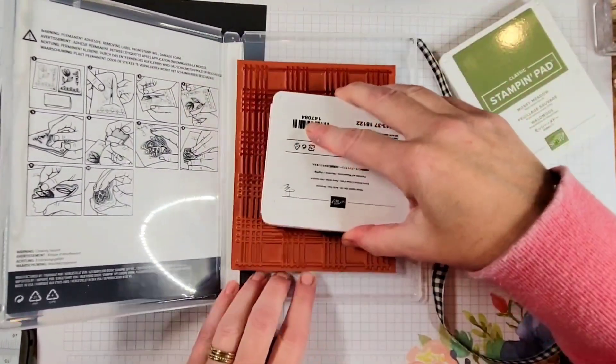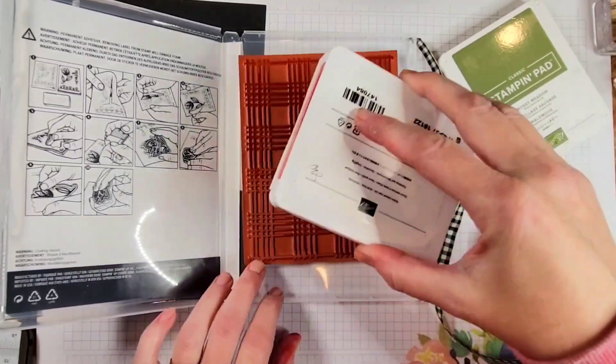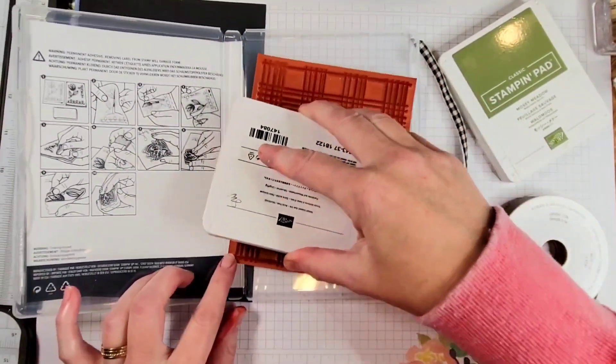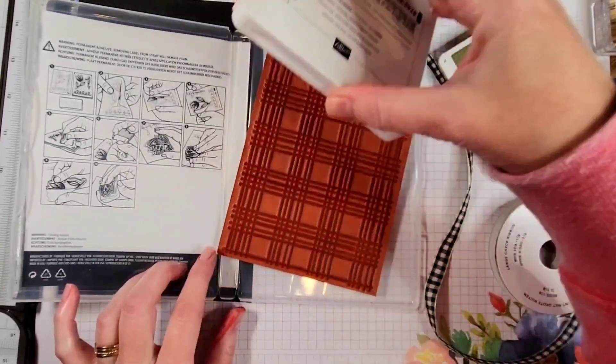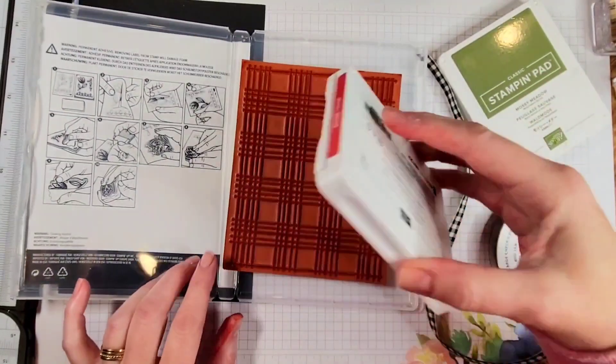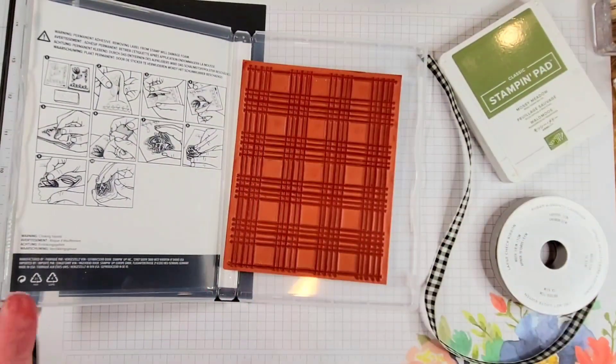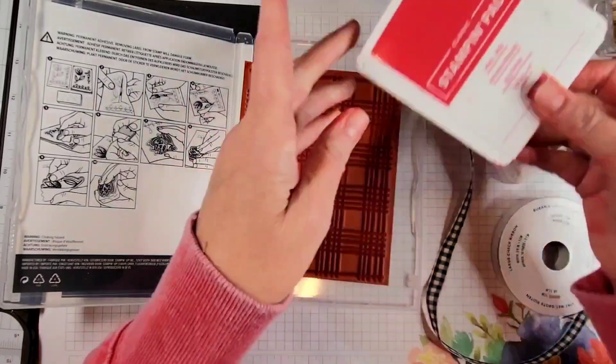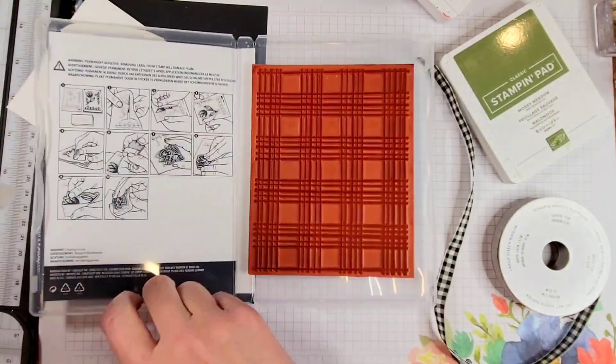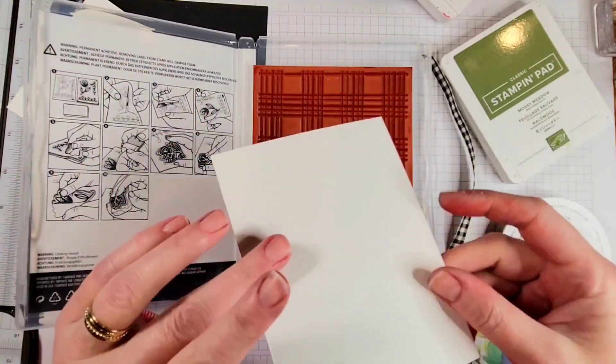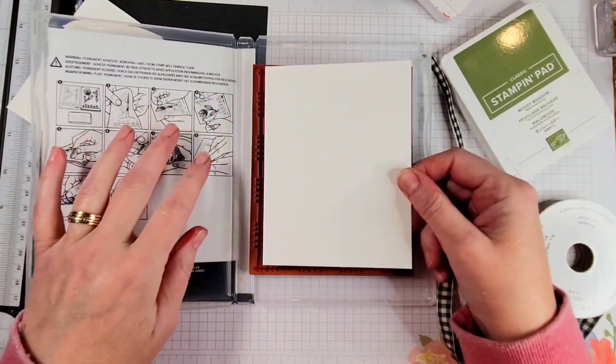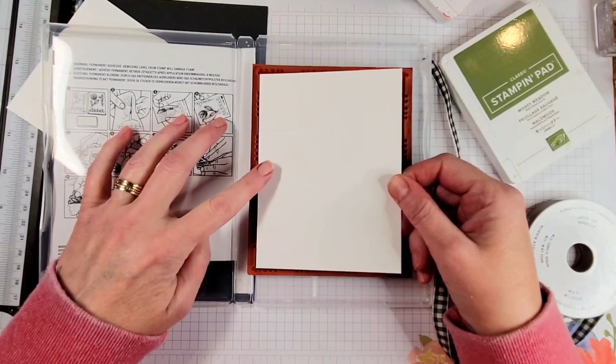I love using real red and mossy meadow. And then on the other hand, when I use cherry cobbler, I like to use some of the lighter greens like garden green. I feel like when I use mossy meadow and cherry cobbler together, they kind of compete a little bit. But I love all the reds and greens. It's really fun to mix and match. This is a regular card front, and the trick here is just to get it straight with the lines.